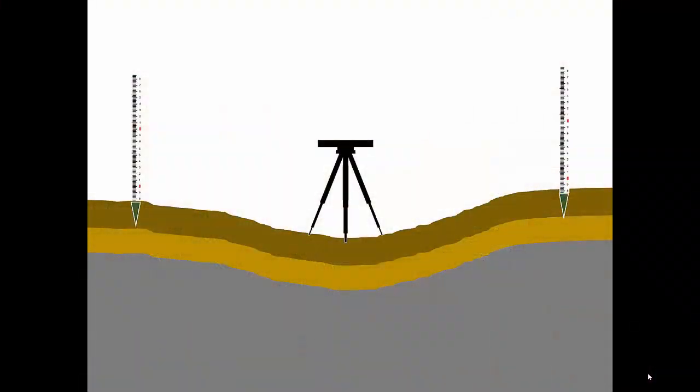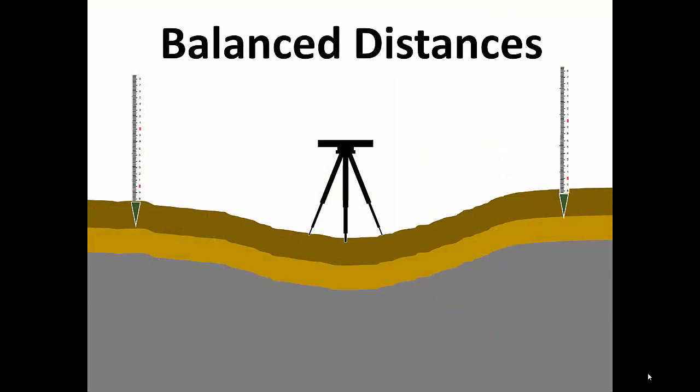Some professionals calibrate their levels monthly to ensure quality measurements. Use balanced distances to minimize the effects of possible calibration problems. Remember, when the distance to the backside reading matches the distance to the foresight reading, the errors in each reading cancel each other.